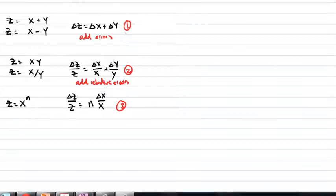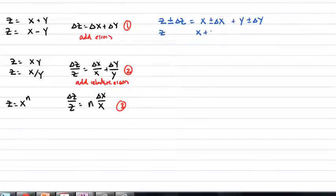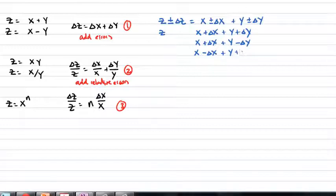Let's start with number one — adding errors — and consider the case where z is equal to x plus y. Because there's going to be some uncertainty in z, I'm going to write explicitly that z can take the value z plus or minus delta z on the left-hand side of the equation. That's going to be equal to x plus or minus delta x, plus y plus or minus delta y. Looking at this expression, you'll see that there are four possibilities for z: x plus delta x plus y plus delta y; x plus delta x plus y minus delta y; x minus delta x plus y plus delta y; and x minus delta x plus y minus delta y.